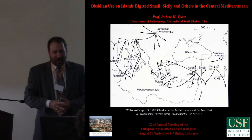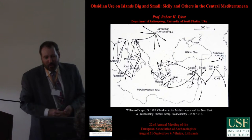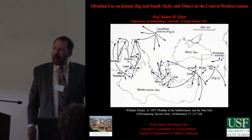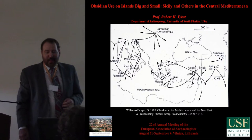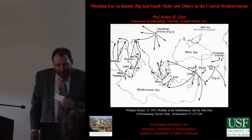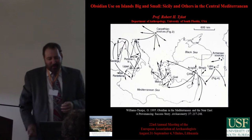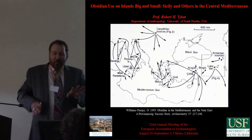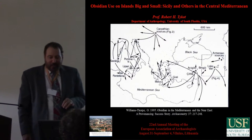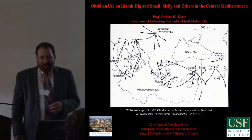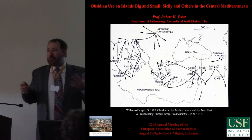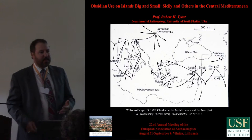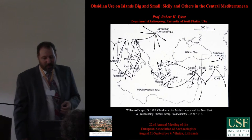Many of you know I've been working on obsidian in the Mediterranean world for quite some time. I'm going to focus specifically today on Sicily and the islands around there. This map from more than 20 years ago, made by Olwin-Williams Thorpe, showed where we were at that point. The idea, of course, is where obsidian came from and what that tells us about trade and exchange and contacts in the Neolithic and later time periods.